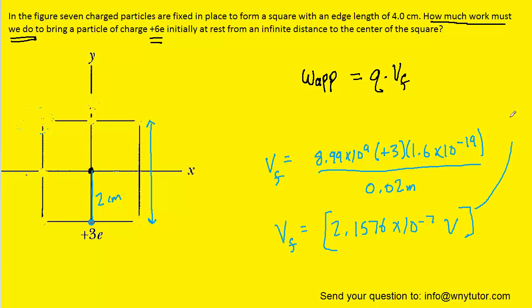So in other words, we can take this value and plug it in for the final potential. As for q, that would be the charge of the charge that we're actually moving to the center. And that had a value of positive 6e. Remember, this is the one that we were actually moving from infinity to the center of the square. So we'll plug in positive 6e for this charge here.